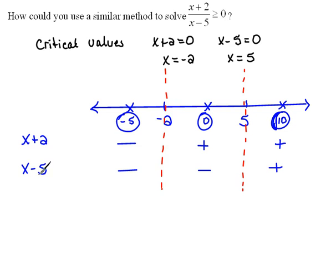Now let's look at the combination of those. Our problem really had x plus 2 divided by x minus 5. So if I were to divide a negative divided by a negative, that would be a positive. If I took a positive divided by a negative, that would be negative. And a positive divided by positive would be positive.